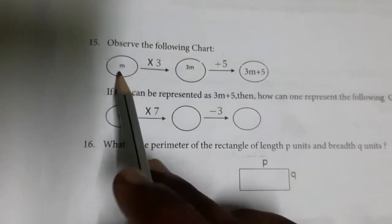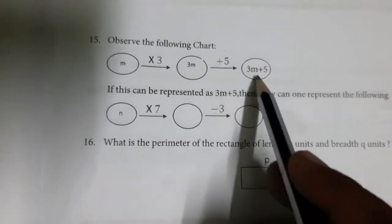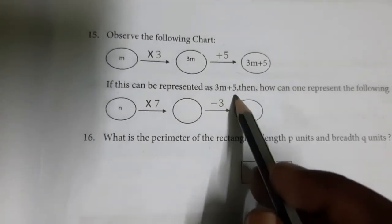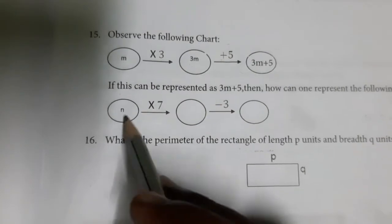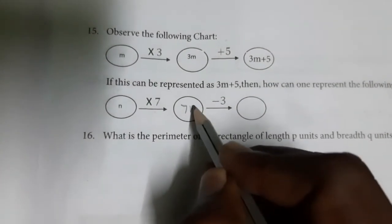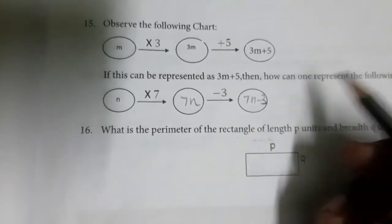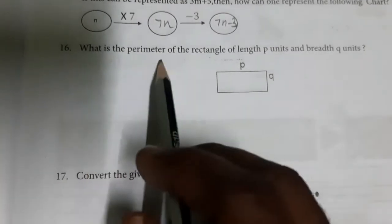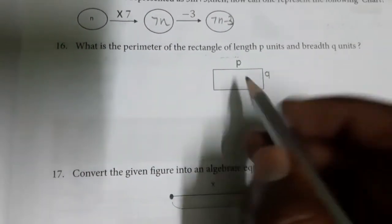Question 15: Observe the following chart — m times 3 gives 3m, and 3m plus 5. If this pattern is represented as 3m+5, how do you represent the next chart? n times 7 gives 7n, and 7n minus 3. So the answer is 7n minus 3.